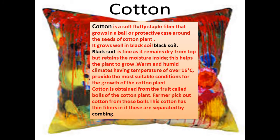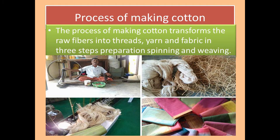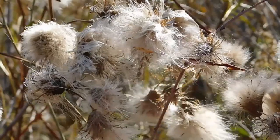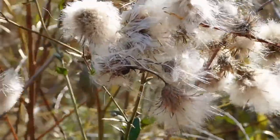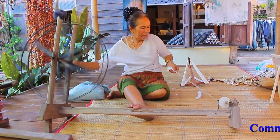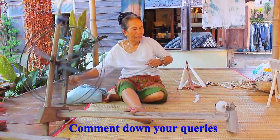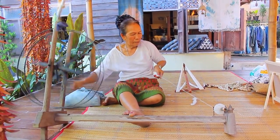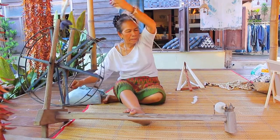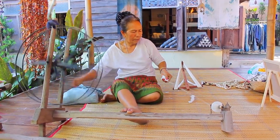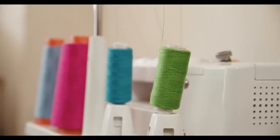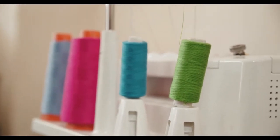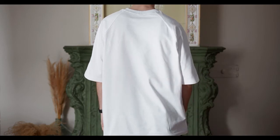Cotton is obtained from the fruit of the cotton plant. Farmers pick cotton from these balls, which contain thin fibers that are separated by combing. For processing, cotton balls are first collected and cleaned — that step is called preparation. Then it is spun on a spinning wheel, also called a charkha, to make yarn. This yarn is then converted into fabric by the process of weaving. The cotton cloth is then beautified and finished before being sold in the market.